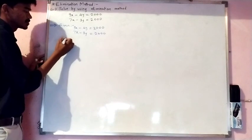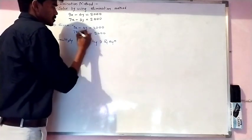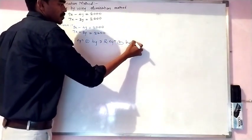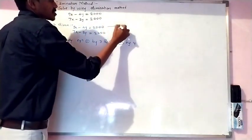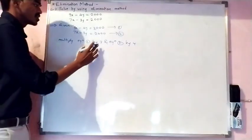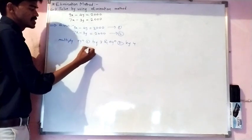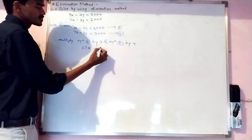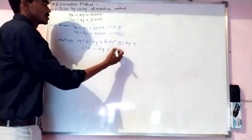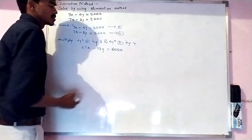The first step is to multiply equation 1 by 3 and equation 2 by 4. Let me name the first equation as equation 1 and the second as equation 2. Multiplying equation 1 by 3: 9 times 3 gives 27x, minus 4 times 3 gives 12y, equals 2000 times 3 which is 6000. We call this equation 3.